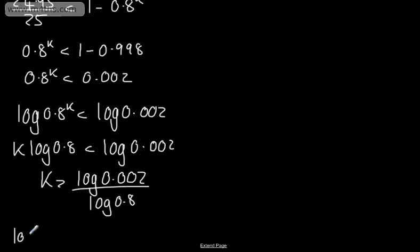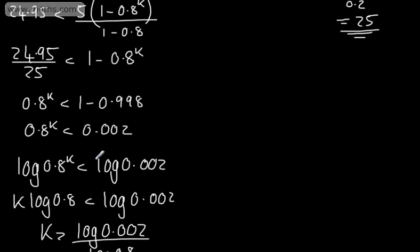I'm just going to write here, log of 0.8 is negative. Therefore, switch sign. I don't think we'd need to do that, but just to make sure we're showing why this has changed around, we're dividing by a negative number.